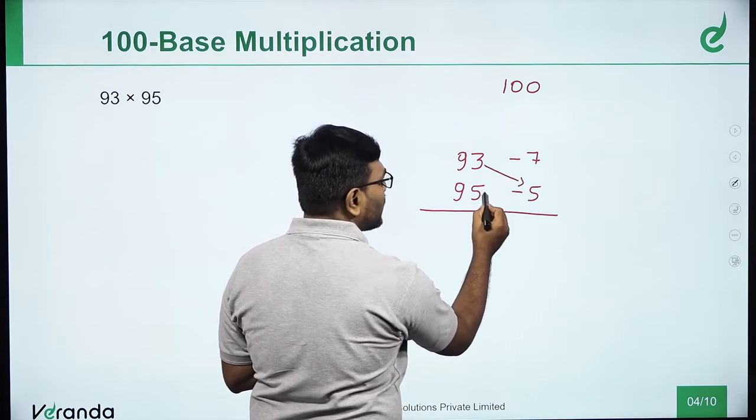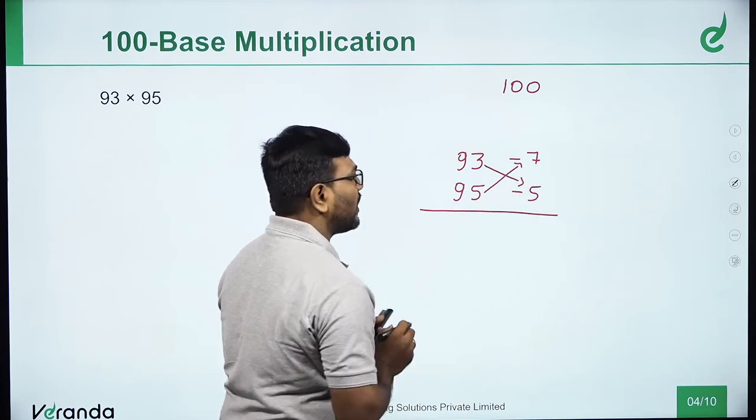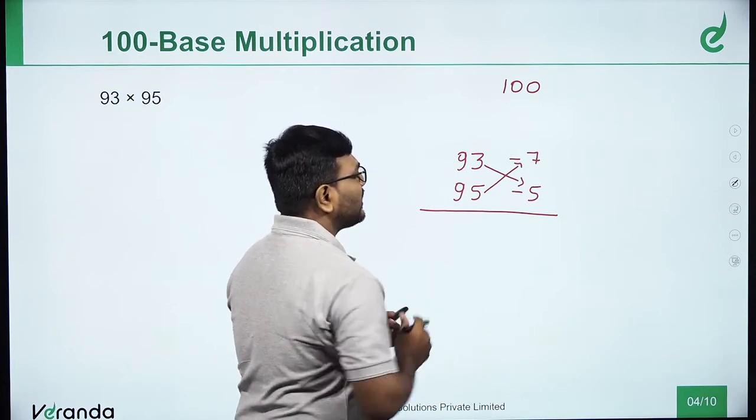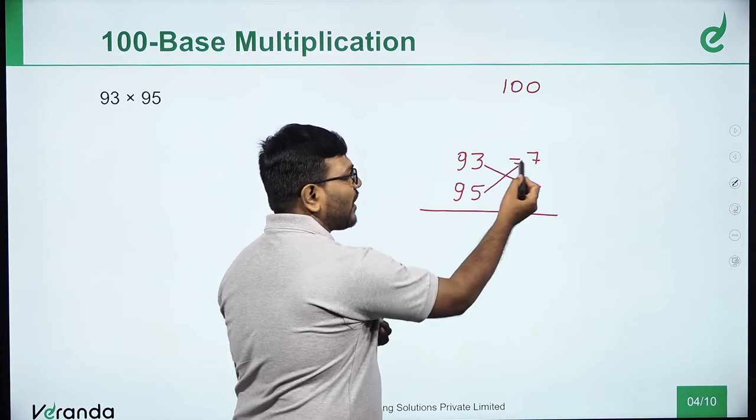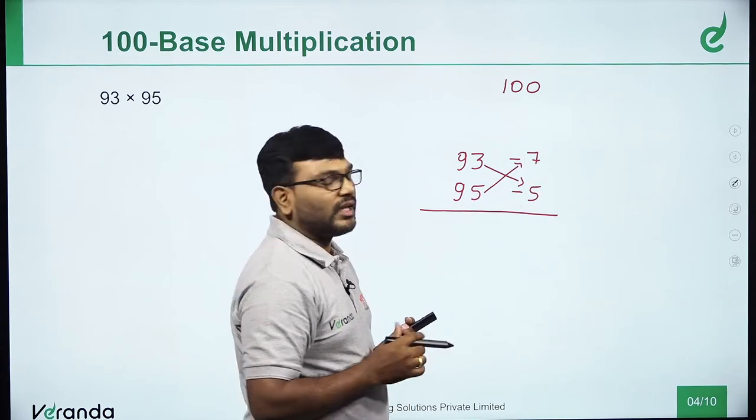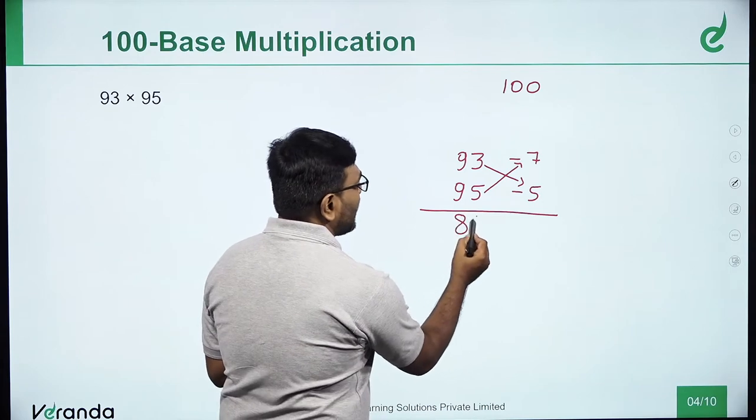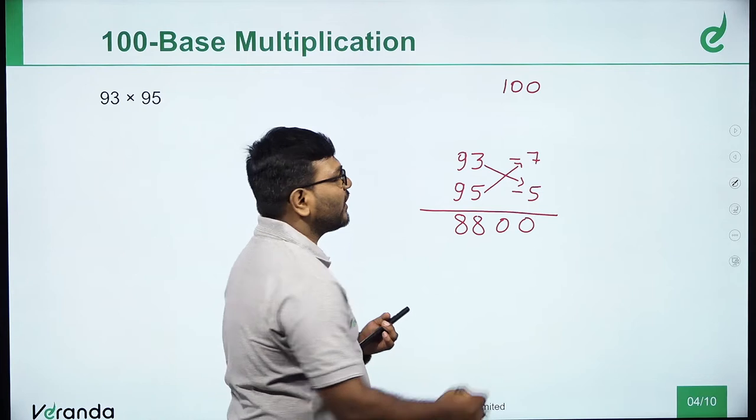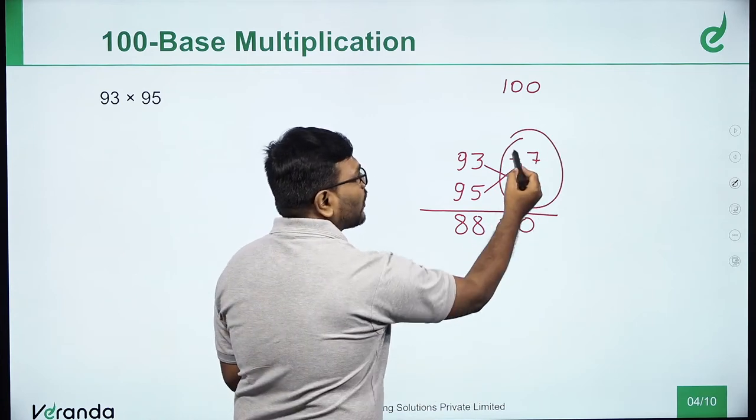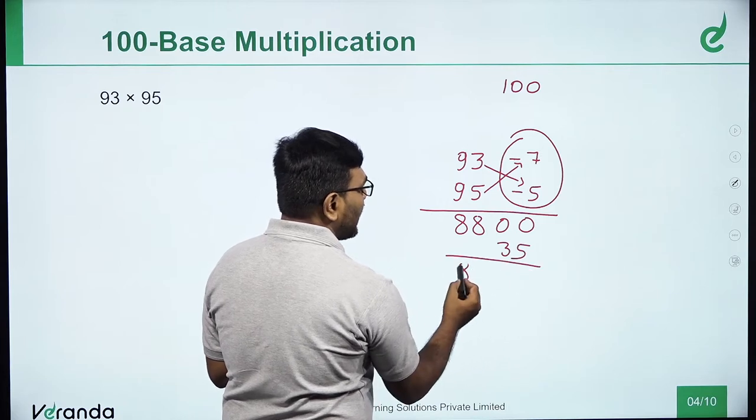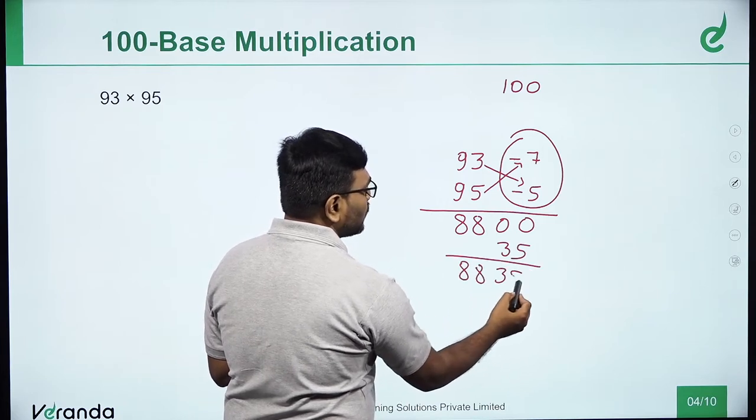The differences multiply: minus into minus plus. 88 into 100 gives 8800, then multiply the differences to get 35. Answer is 8835.